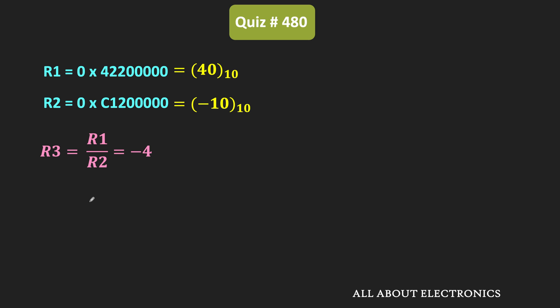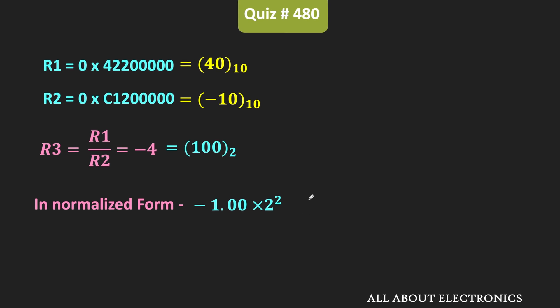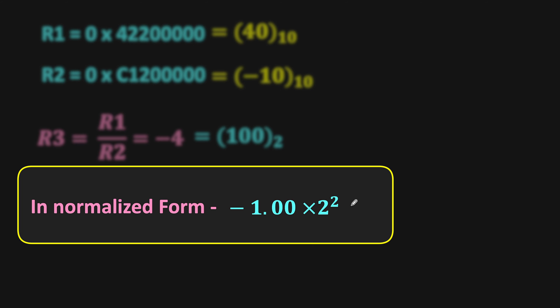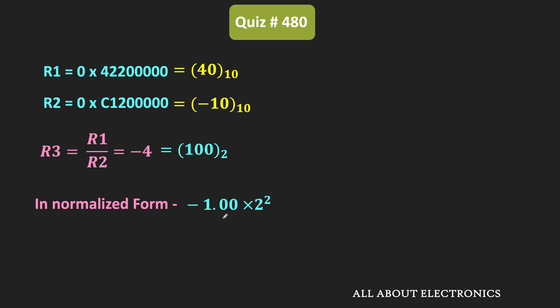To find the IEEE representation, first let us represent the given number in binary form. In binary, 4 corresponds to 100. Normalizing this value: in normalized form, we have only one significant digit before the binary point, and that digit is equal to 1. So minus 4 in normalized form is equal to minus 1.00 times 2 to the power 2. The exponent is equal to 2, the fractional part is equal to 0, and the given number is negative.